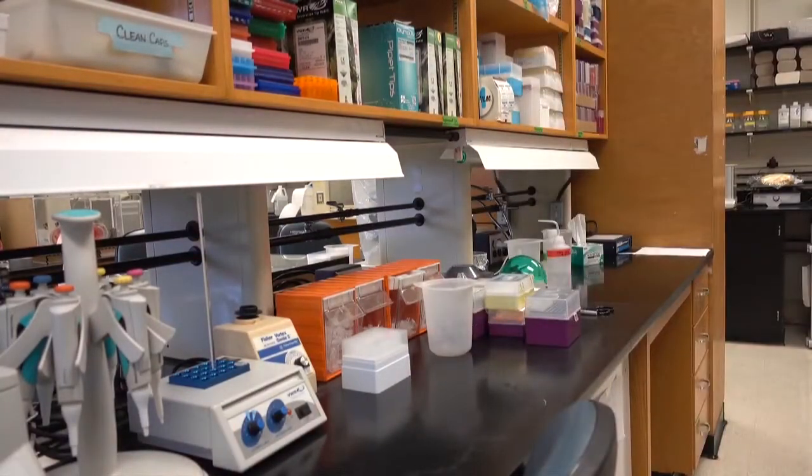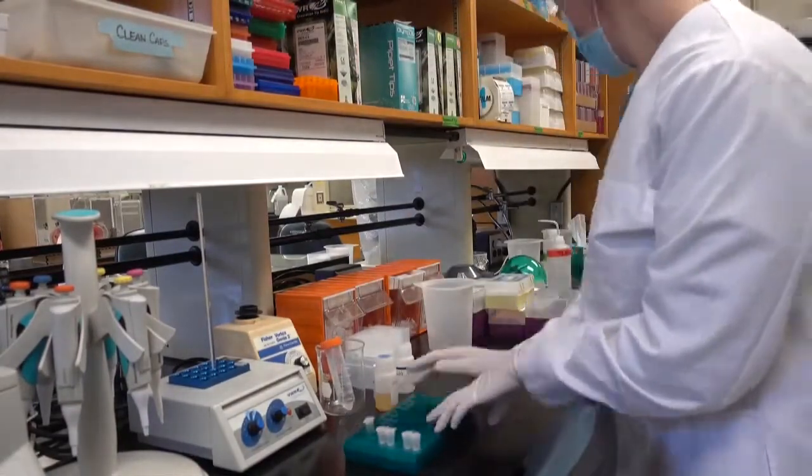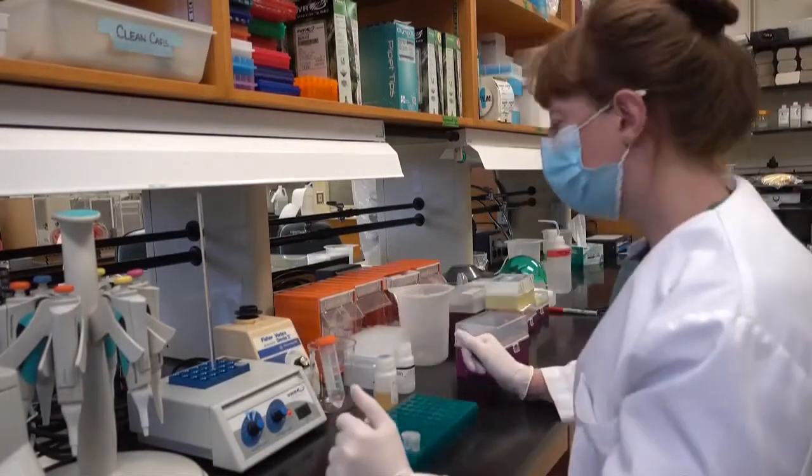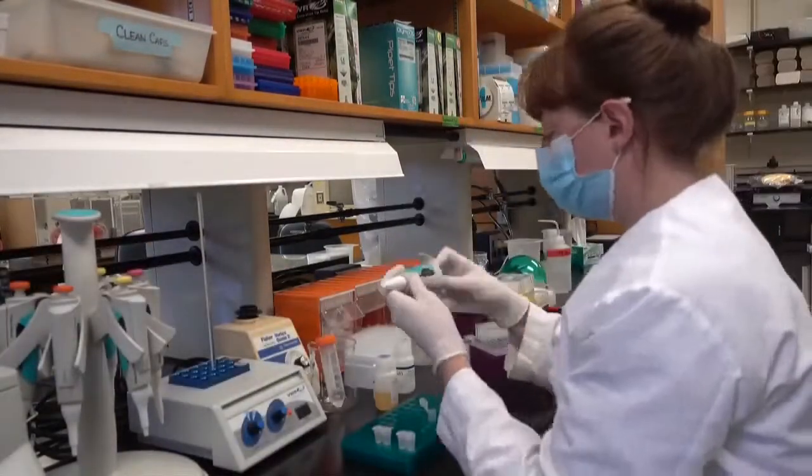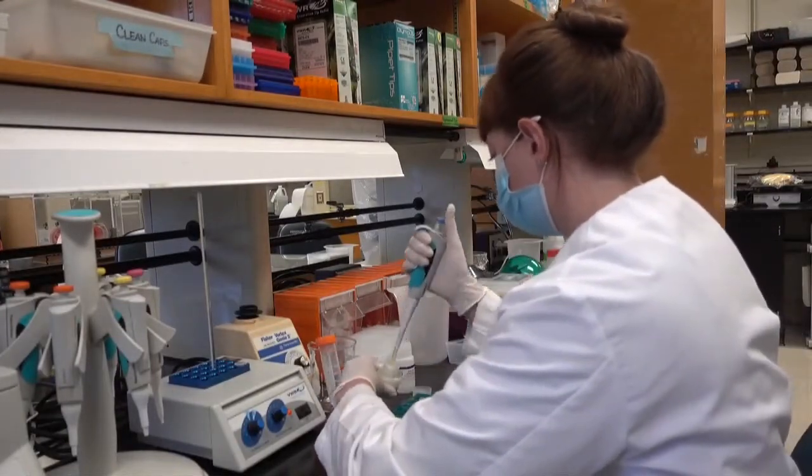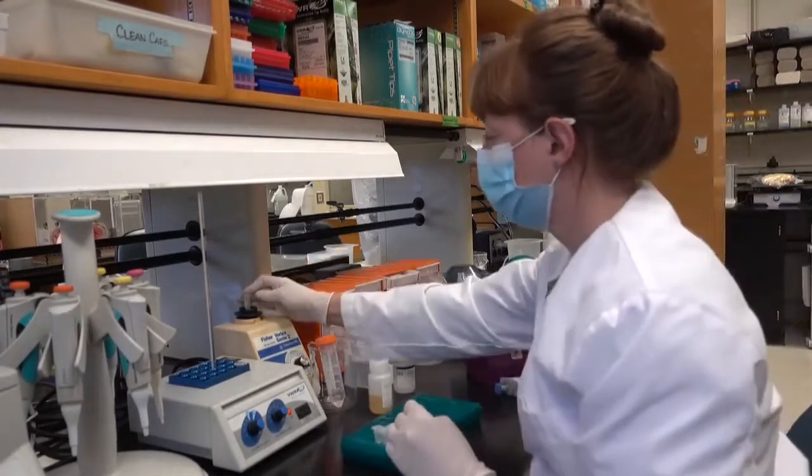Here you can see me getting set up and getting all the buffers and other supplies that I'm going to need for this process out and ready to go. And all of these buffers need to be added to my sample in very specific amounts. So to do this, I use a pipette, which allows me to measure these amounts of liquid accurately.